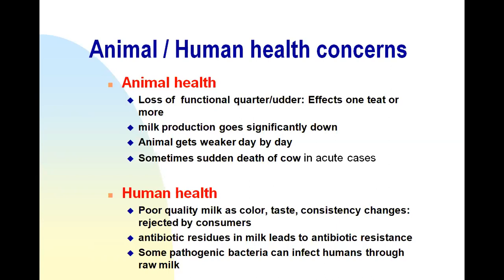From the human health point of view, poor quality milk results — color, taste, and consistency change due to inflammatory changes in the udder. This milk is rejected by consumers and has low market value. Antibiotic residues from irrational use of antibiotics in treating mastitis can lead to antibiotic resistance in humans through consumption of milk containing those residues. Consuming raw or unpasteurized milk from animals with mastitis caused by pathogenic bacteria can also cause other types of infections in humans, such as staphylococci.